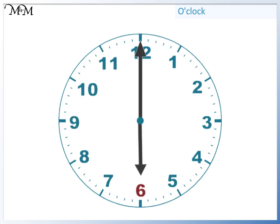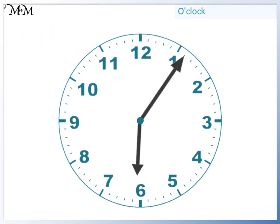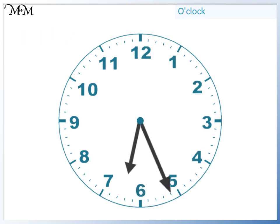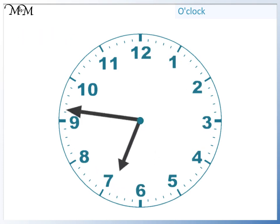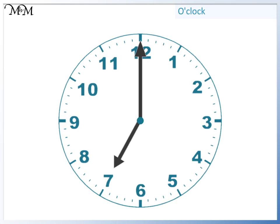The hour hand is pointing at 6. The time shown is 6 o'clock. Another hour passes, and the time is 7 o'clock.